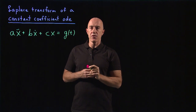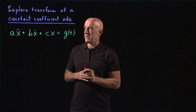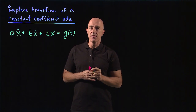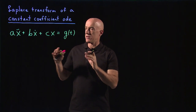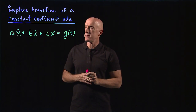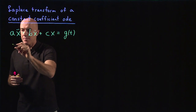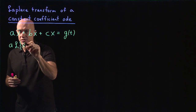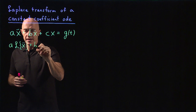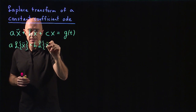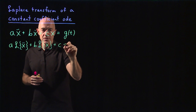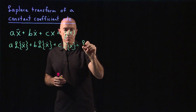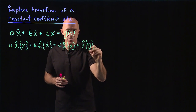We take the Laplace transform of this equation, meaning taking the Laplace transform of both sides, and we use the linearity of the transform. So we can apply the transform to each term and pull the constants out. We end up with a times the Laplace transform of x double dot, plus b times the Laplace transform of x dot, plus c times the Laplace transform of x, equal to the Laplace transform of g, the right hand side.